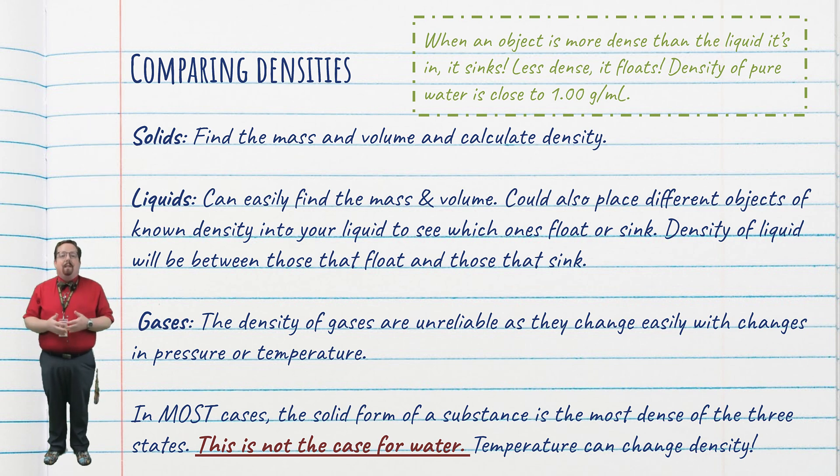To find the density of a liquid, you can first place an empty graduated cylinder on a balance, zero the balance, then pour whatever volume of liquid you'd like into it. This will give you the mass and the volume of the liquid at the same time. You could also place objects of varying densities in the liquid to see which ones sink or float. The density of the liquid would be somewhere between the least dense object that sinks and the most dense object that floats.